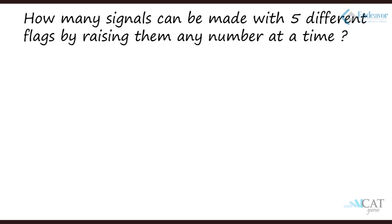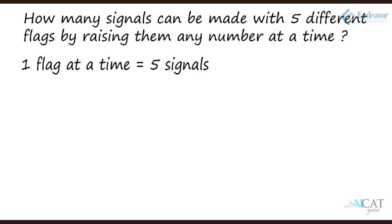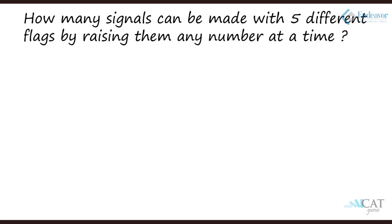Let's look at one problem which applies both concepts together: how many signals can be made with five different flags by raising them any number at a time? Name the flags A, B, C, D, E. Raising one flag at a time gives five signals. For two flags at a time — picking A and B — I can make signal AB or signal BA. Similarly B and C gives BC or CB. So I need to find how many ways I can select two flags, which is 5C2.